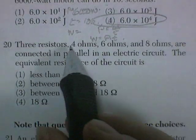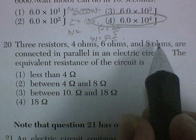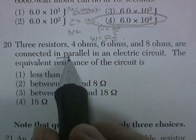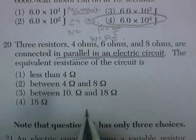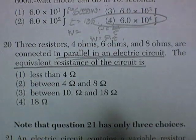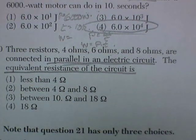Question 20. Three resistors, 4 ohms, 6 ohms, and 8 ohms, are connected in parallel in an electric circuit. The equivalent resistance of the circuit is? Well, we've got a formula for this.